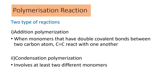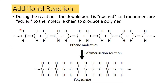There are two types of polymerization reactions: addition polymerization and condensation polymerization. In addition polymerization, monomers that have double covalent bonds between two carbon atoms react with one another — the same monomer just adds to each other. In condensation polymerization, at least two different monomers are involved, and the reaction releases water or HCl as byproducts. During the addition reaction, the double bond opens — one bond from the double bond is cut, becoming two single bonds — and monomers are added to the chain to produce a polymer.